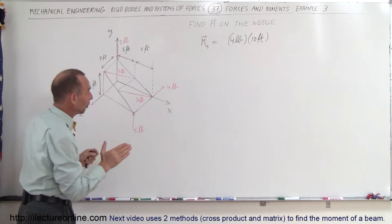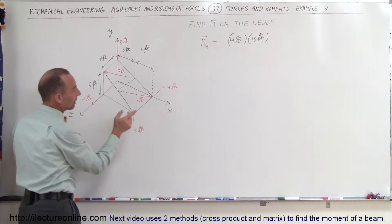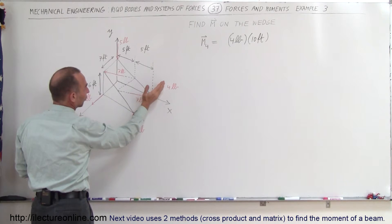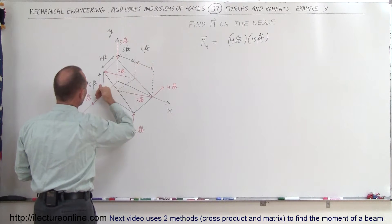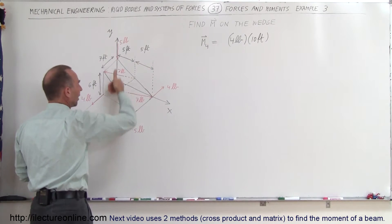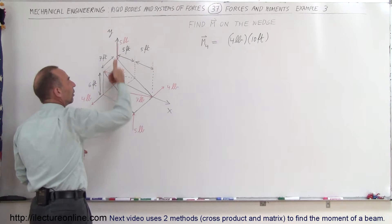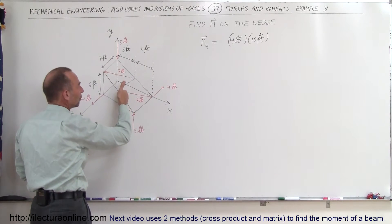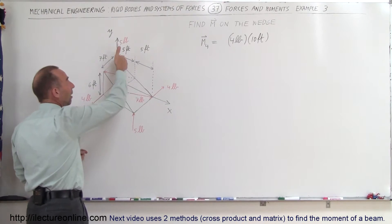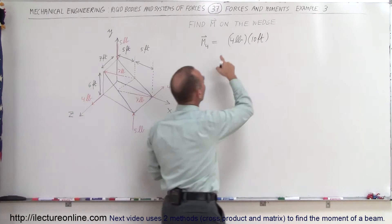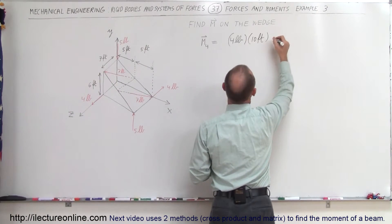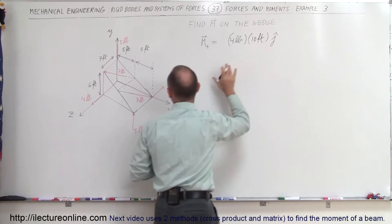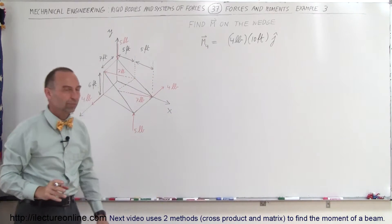But what is the direction? You take your finger, point in the direction of one of the 4-pound forces, and curl it down to the other 4-pound force. Your thumb will point perpendicular away from the plane made by those two forces — that would be in the positive Y direction. So it's 40 foot-pounds in the Y direction.